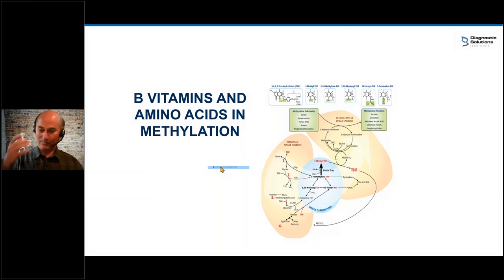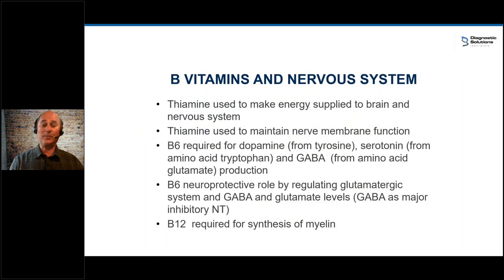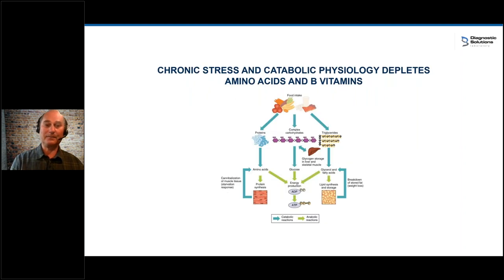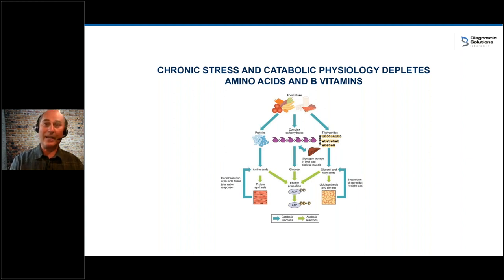If a patient has a problem with their nervous system — they're depressed, anxious, in pain — you talk about the role of B vitamins and amino acids in neurological function. If the patient is stressed, has an adrenal problem, is breaking down tissue, can't put on muscle mass — you talk about amino acids and B vitamins in relation to catabolic physiology. Same with carbohydrate metabolism: craving sweets, gaining weight, high cholesterol, high triglycerides.